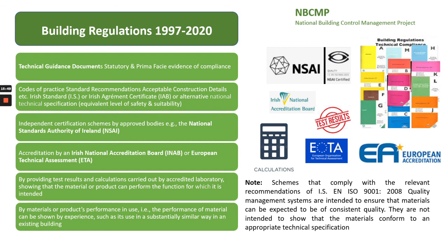To finish, a short discussion on how to show compliance with building regulations — this applies not only to fire doors but to all construction products. Technical Guidance Documents are statutory and prima facie evidence of compliance, meaning if construction is built according to them it is compliant with building regulations. An Irish Standard Certificate, Irish Agreement Certificate, or Alternative National Technical Specification Certificate can also show compliance with building regulations.